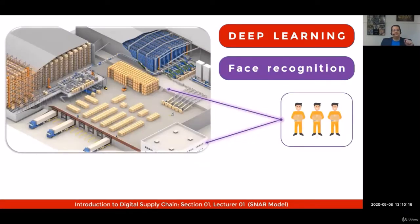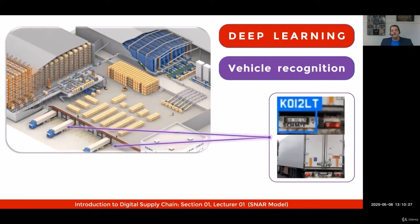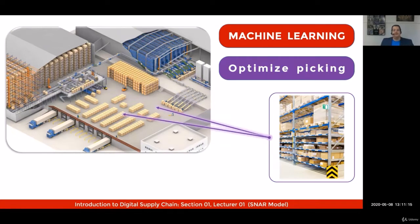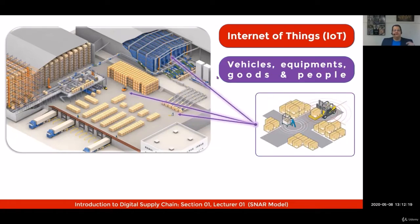I'll use the SNAR model to illustrate the impact of digital transformation in a warehousing operation. One possible approach is using deep learning to help with face recognition. You can also use deep learning for vehicle recognition, and machine learning for product assignments within positions in your warehouse, closely updating the parameters of your WMS.